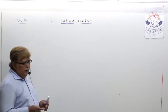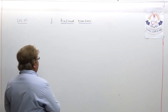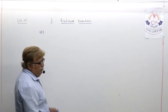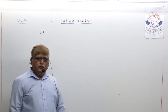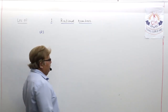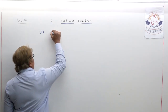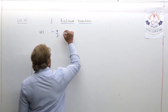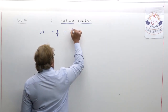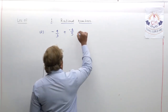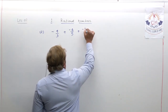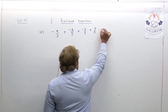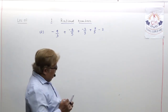Let us write one example and try to solve it. I am just continuing the series — one example we already did of the same type in lecture number 1, so let us take another one. My dear student, start writing: minus 4 upon 3, plus minus 4 upon 5, plus minus 2 upon 3, plus 7 upon 5, minus 2. This is the example written here.